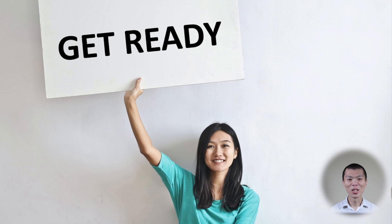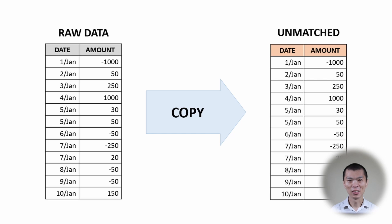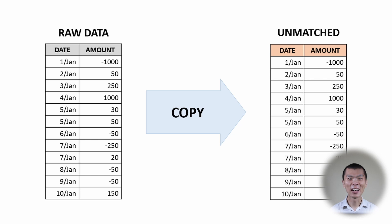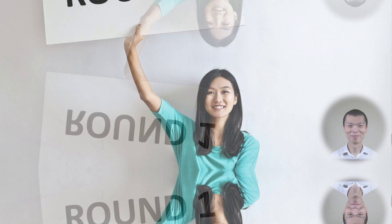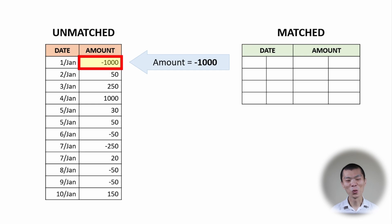First, we want to get the ground ready. We do not want to disturb the original data, so we make a copy of the raw data into the unmatched list. The presumption is that before matching, everything is unmatched. We will work from the unmatched data rather than the raw data.